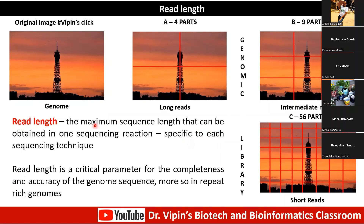Read length is specific to each platform: Illumina gives around 150 bases, Ion Torrent around 100 bases, Nanopore on average 10 kb, and PacBio SMRT sequencing 10 kb to 30 kb very easily — so assembly becomes a lot easier. Read length is a critical parameter for completeness and accuracy of the genome sequence, more so in repeat-rich genomes. The human genome has more than 50% repeat content, so if you rely only on unique overlaps, you will not be able to assemble the genome together.